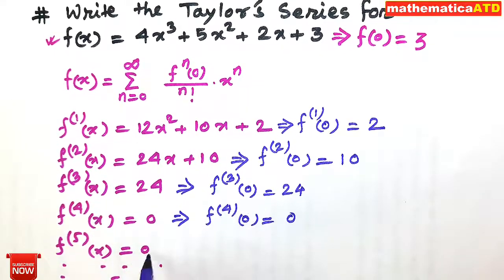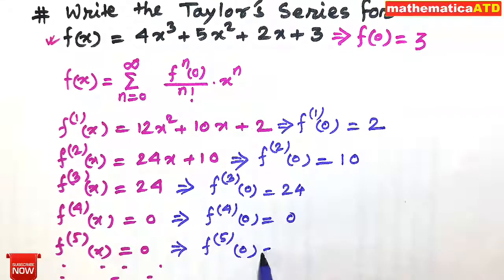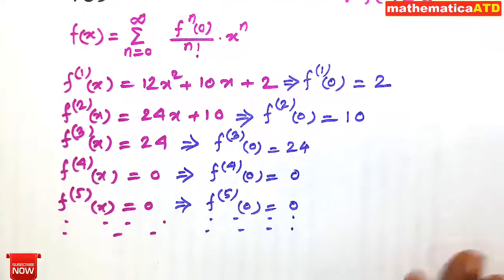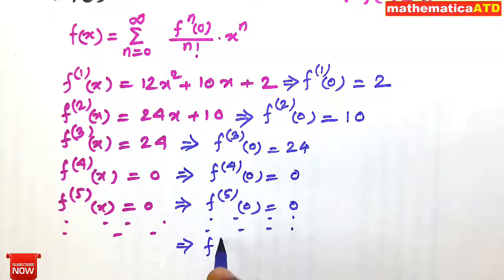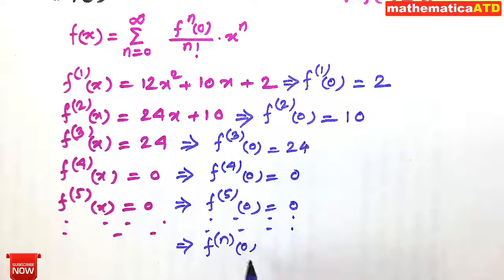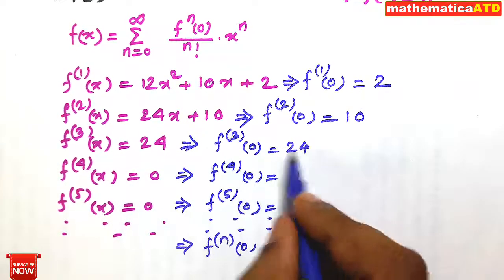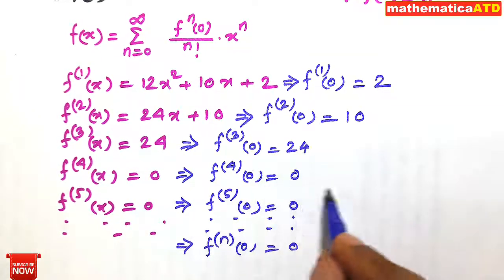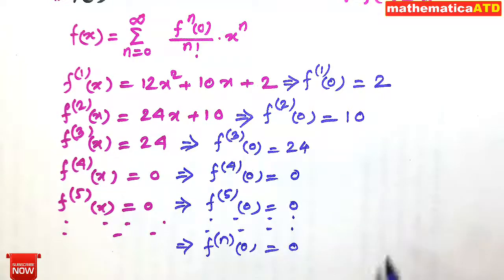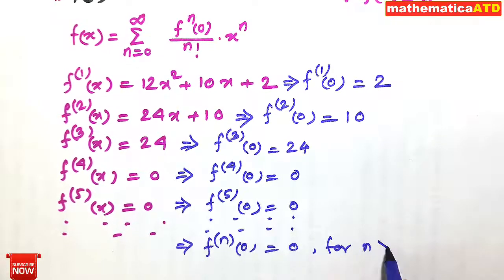f''''(0) = 0, f^(5)(0) = 0, and so on. After some point, f^(n)(0) = 0 — that is, the nth derivative of f(x) at x = 0 equals zero for all n greater than 3, because after the third derivative we keep getting 0.